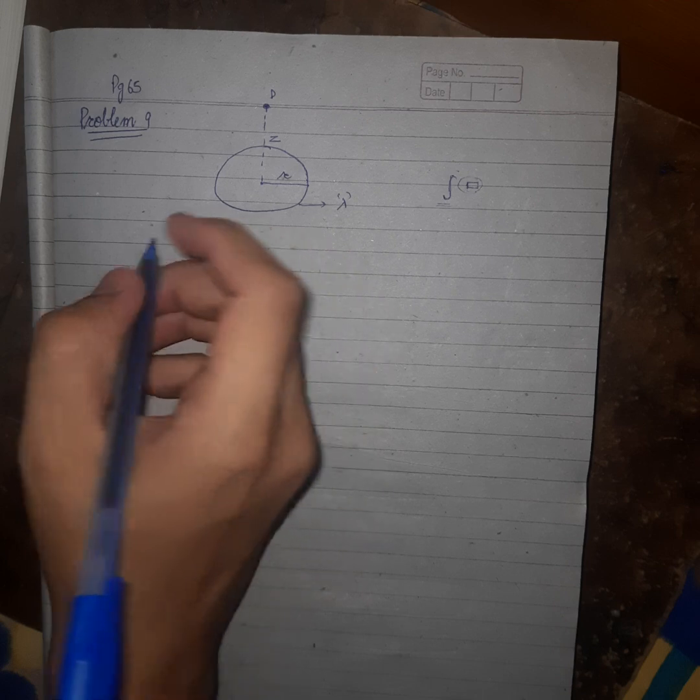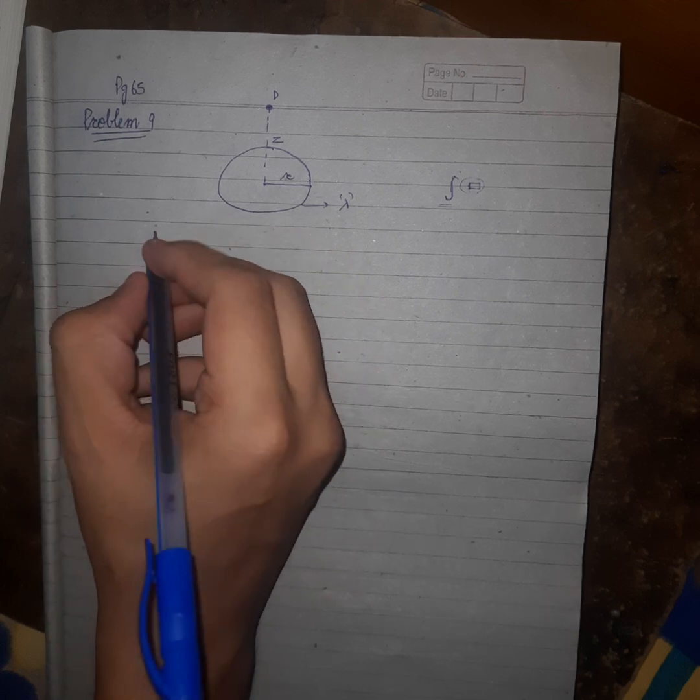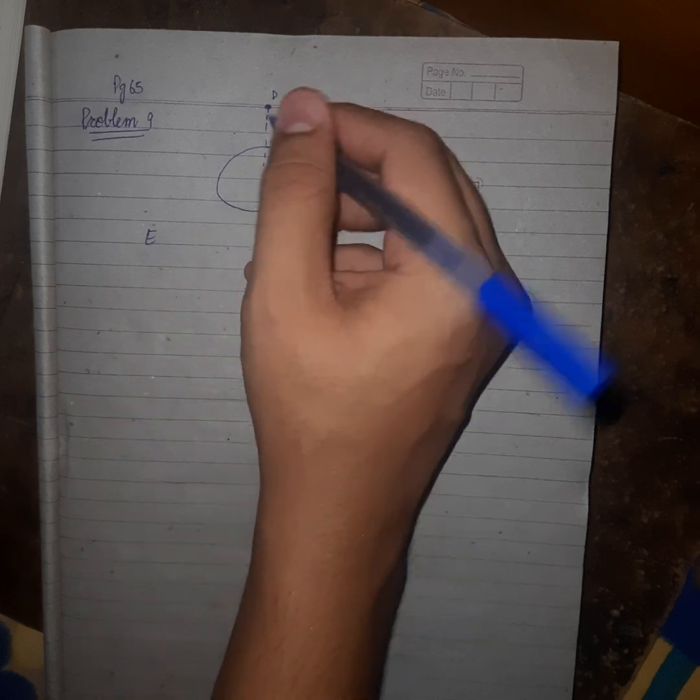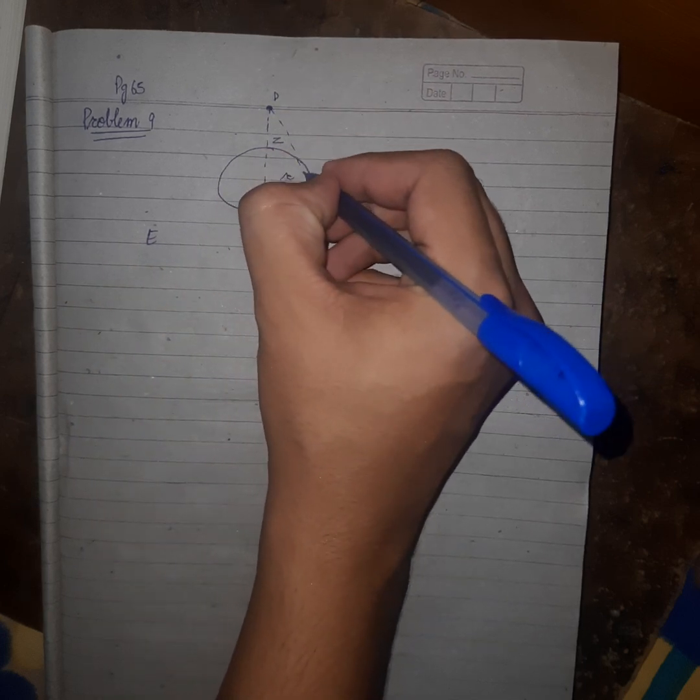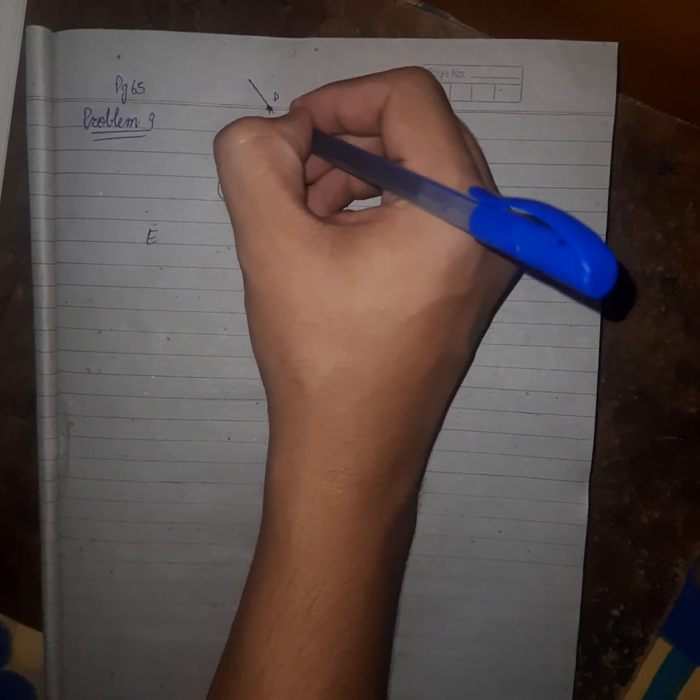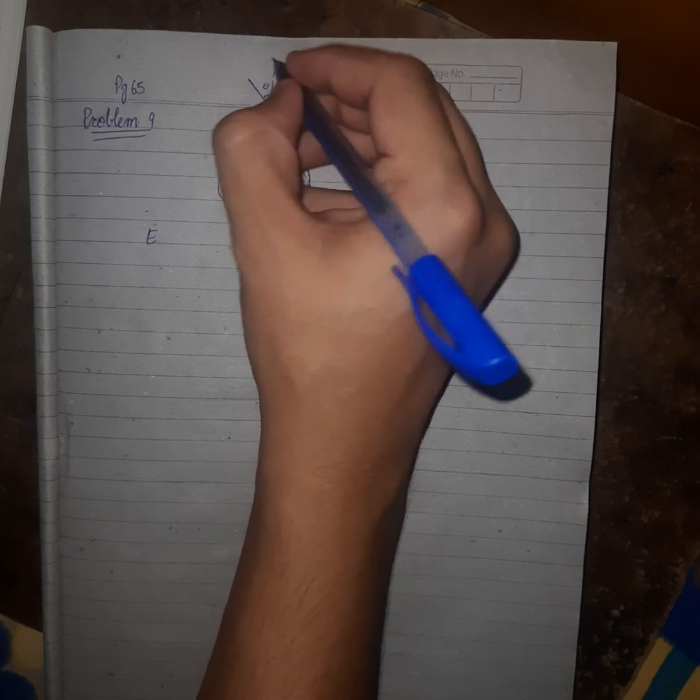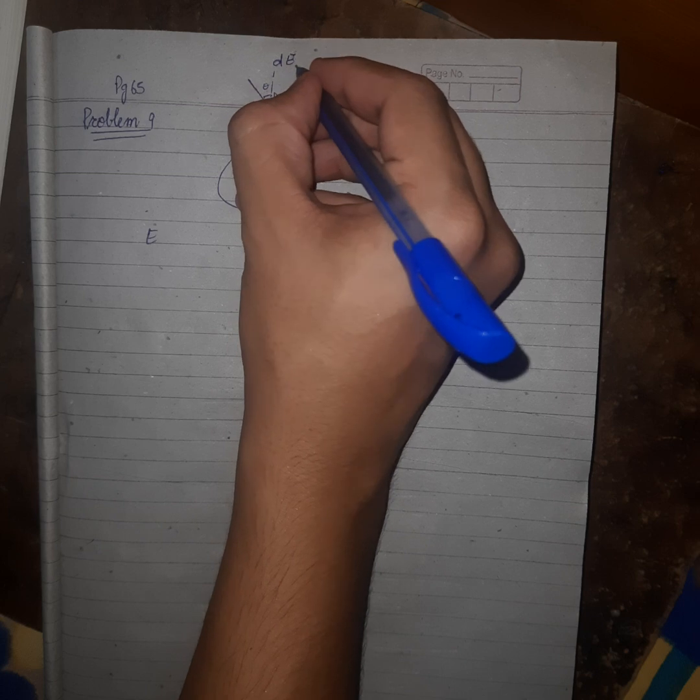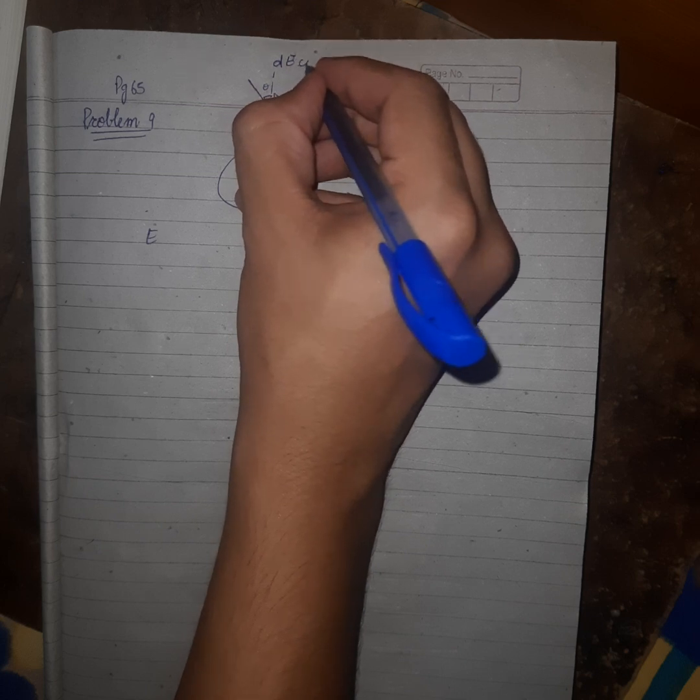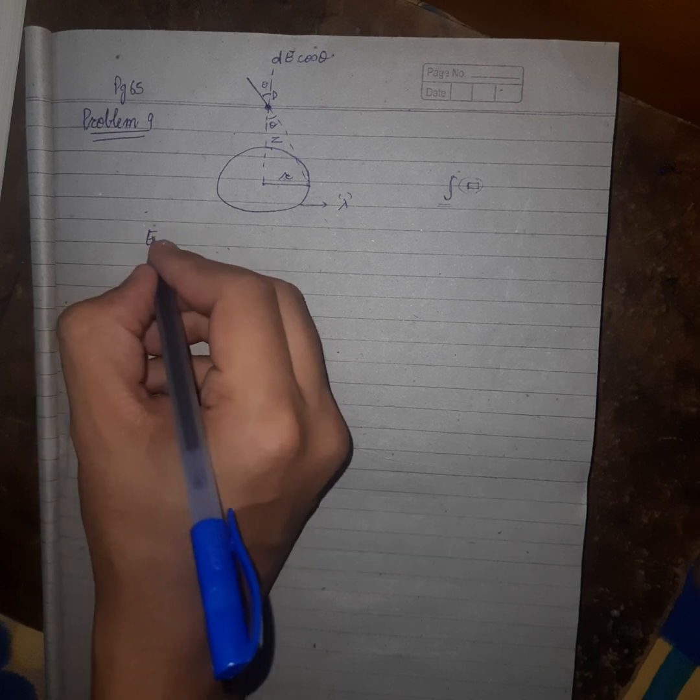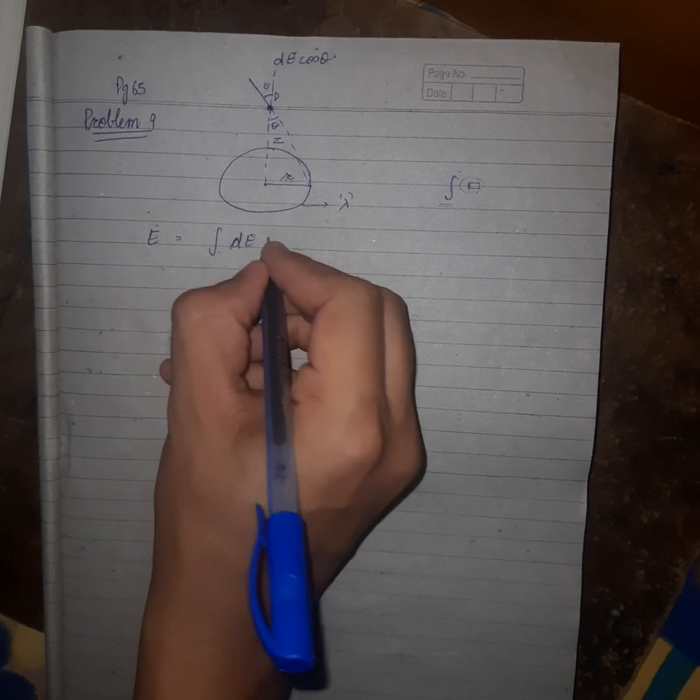Alright, the formula is the same. We'll use electric field. First of all, let's take down the components. If this is angle theta, this is also theta, and this is dE. dE cos theta. We get electric field, net electric field, as an integration of dE cos theta.